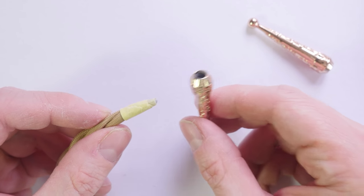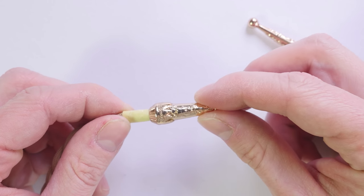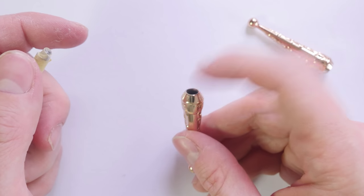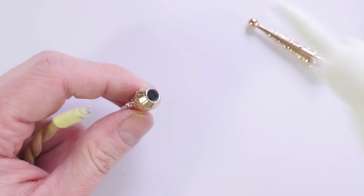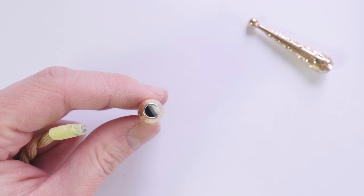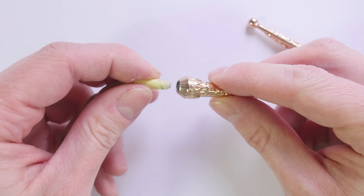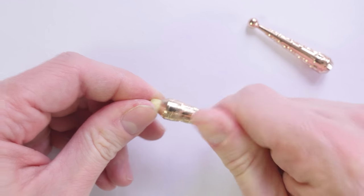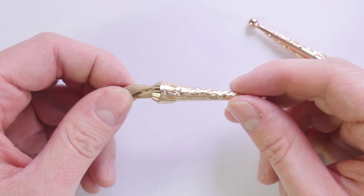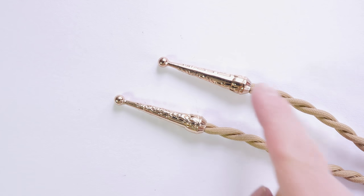Attaching the bolo tie tips is usually quite simple. In my case, I have a nice snug fit, so I can simply screw them on. If you want to further secure your tips, use a bit of glue. Don't use too much, since it can create a bit of a mess. Then simply attach your ends. Like this. Then do the other end as well.